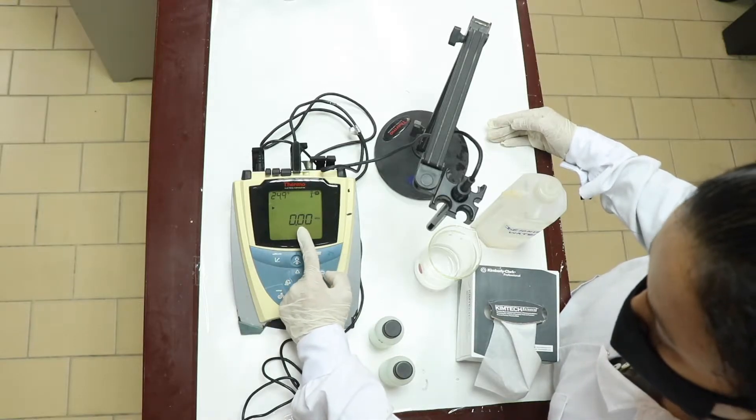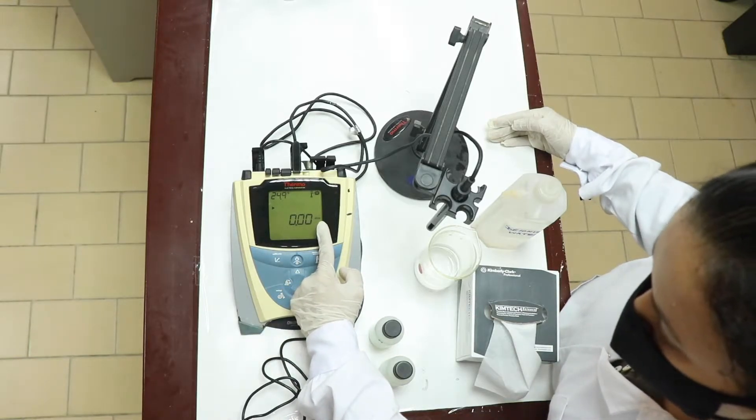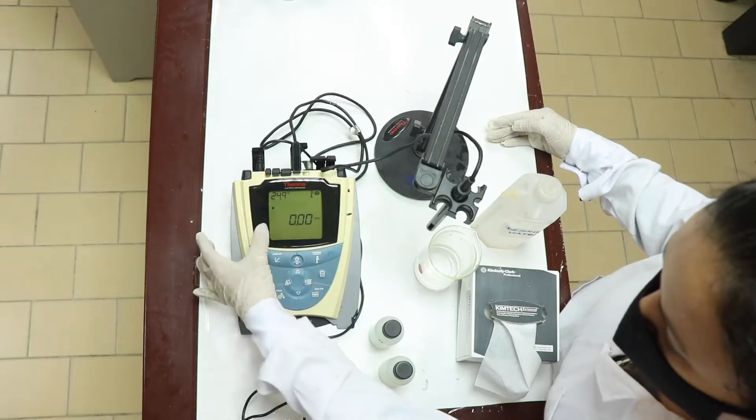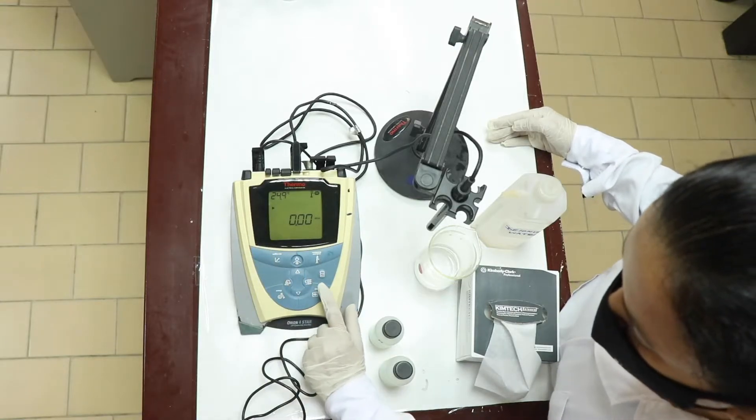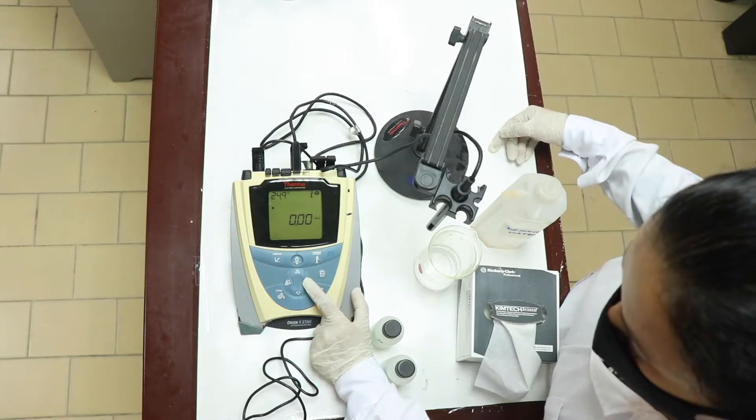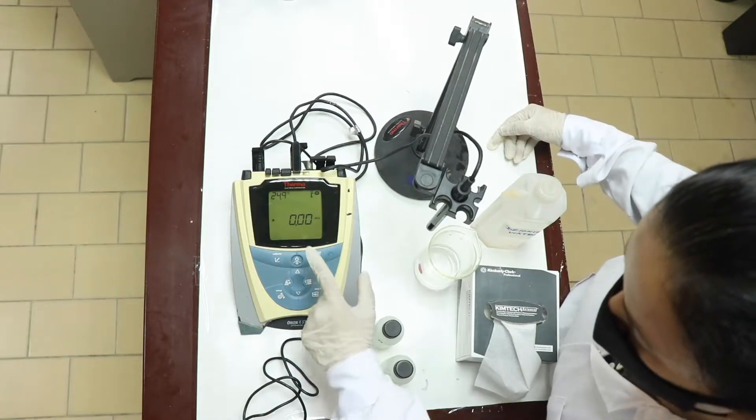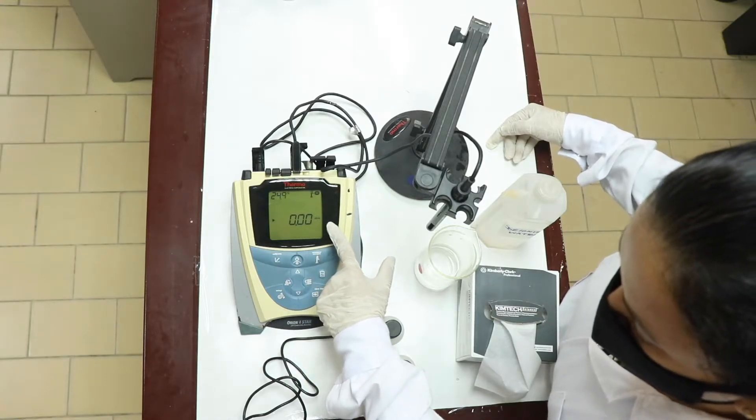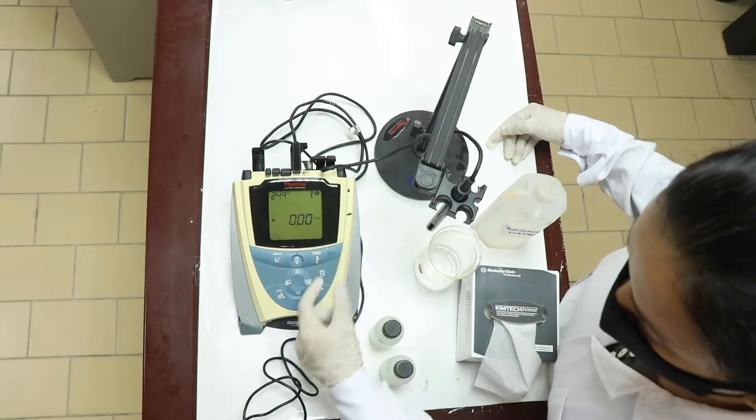Now, you can see 0.00 microcms per centimeter is here but the cursor is up. Using this key, you have to bring the cursor down. If it is now against microcms per centimeter, that means it is ready to read the conductivity.